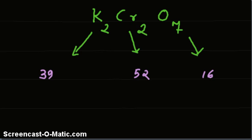Now, multiply these by number of atoms. We have got two atoms of potassium, then two of chromium and seven of oxygen.